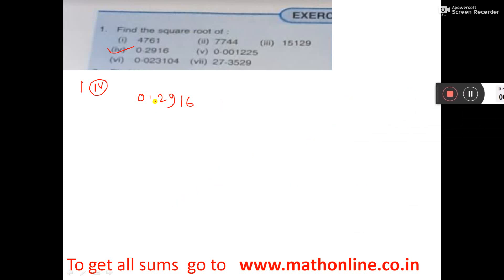This sum I am doing. This is point. Before point, this side you have to make pair, and after point from here, right side you have to make pair.